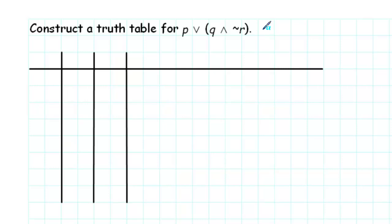Construct a truth table for p or q and not r. In order to do that, the first thing we need to recognize is that this compound statement consists of three simple statements: P, Q, and R.